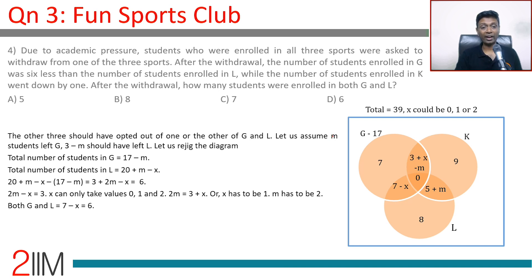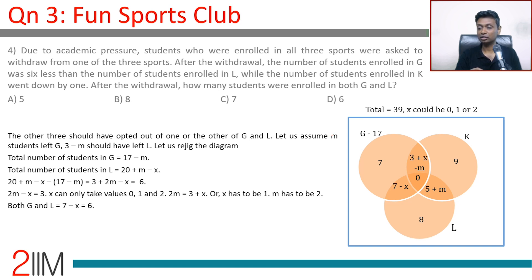Same scenario question: How many students are enrolled in both G and L? That region is 7 minus x. With x equals 1, that's 7 minus 1 equals 6.